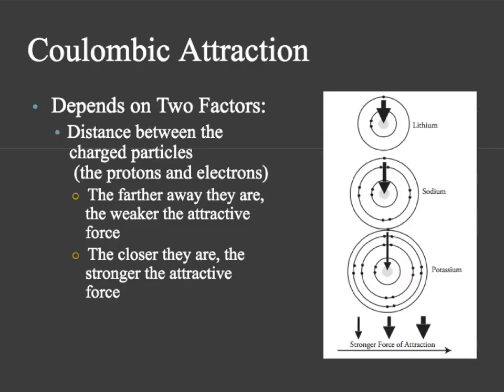Hopefully you realize from today's activity that two factors are going to drive Coulombic attraction. The first factor is the distance between the charged particles — the distance between the protons in the nucleus and the electrons on the outside. We look in particular at the electrons farthest out from the nucleus, because those are going to be held tightly or not so tightly depending on the distance. The farther away they are, the weaker the attractive force.